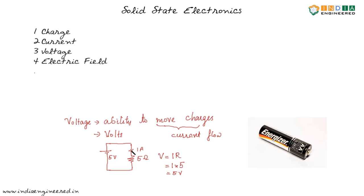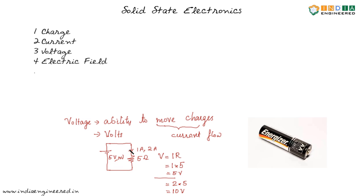What if I want to increase the current? I have to be able to move more charges. Suppose I need a current of 2 amperes instead of 1. What voltage should I apply? Using V equals I R again, I need 2 amperes through a resistance of 5 ohms, so I need 10 volts. As we increased the ability to move charges, more charges moved and caused more current to flow.